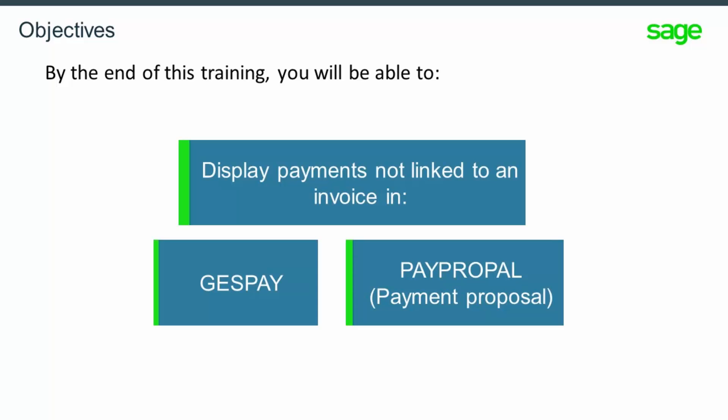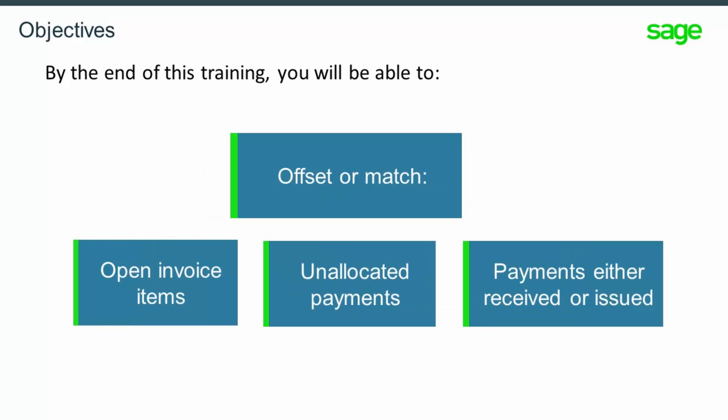In this module, you will learn how to display payments not linked to an invoice in the left list of the GES PAY function and the payment proposal. You will offset or match the open invoice items, unallocated payments, and payments either received or issued.